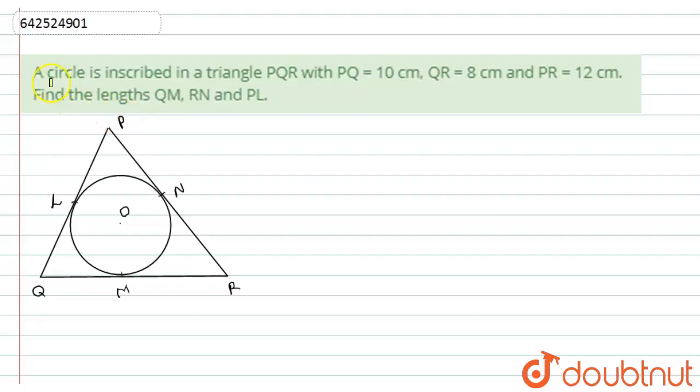Hello student, let's start with the question. Here we have given a circle is inscribed in a triangle PQR with PQ equals 10 cm, QR equals 8 cm and PR equals 10 cm. Then find the lengths of QM, RN and PL.